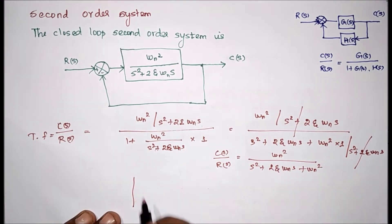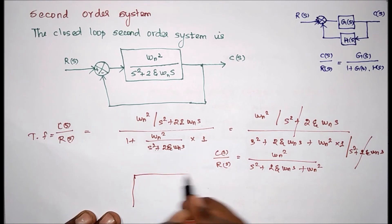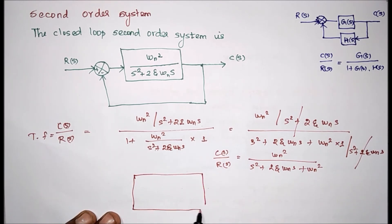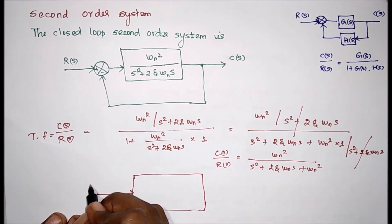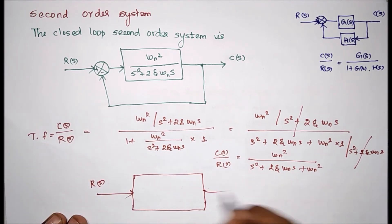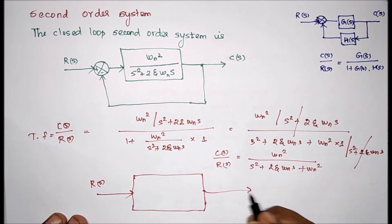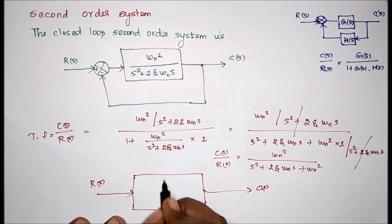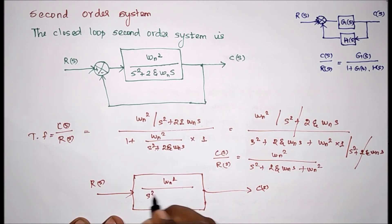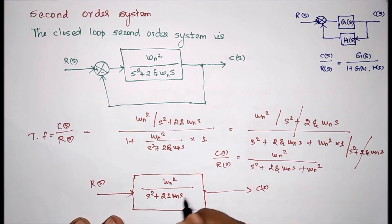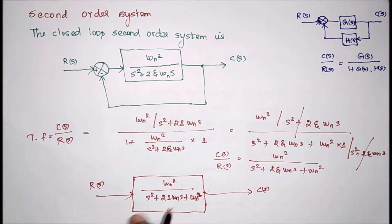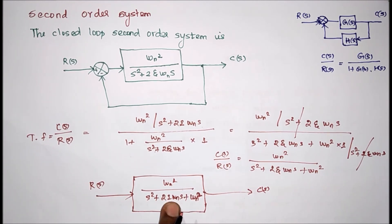Now in block diagram form, we can draw it like this: R(s) is the input, C(s) is the output, and the block contains ωn² divided by s² plus 2ζωn·s plus ωn². This is the format of the second-order closed-loop system.